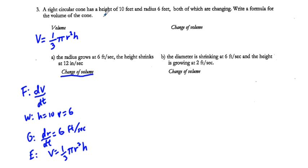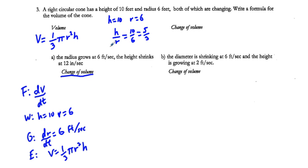We can write the volume in terms of r alone. We have h/r = 10/6 = 5/3, so we can replace h with (5/3)r. Cross-multiplying gives h = (5/3)r.